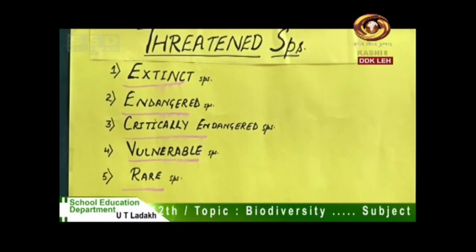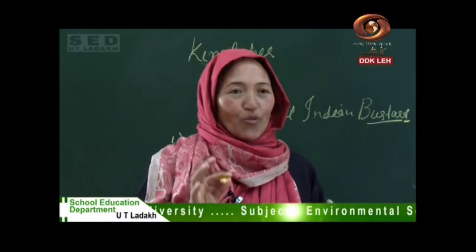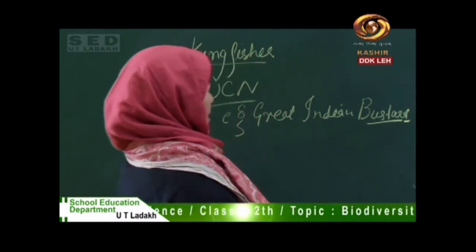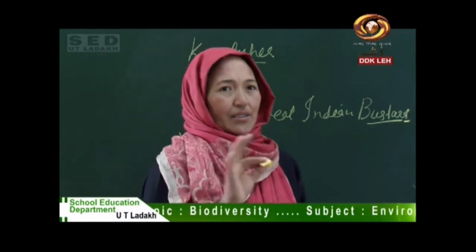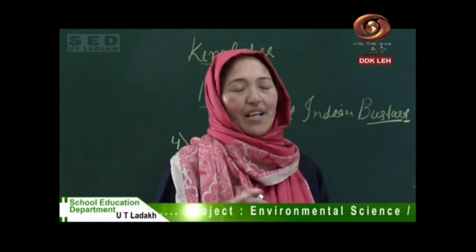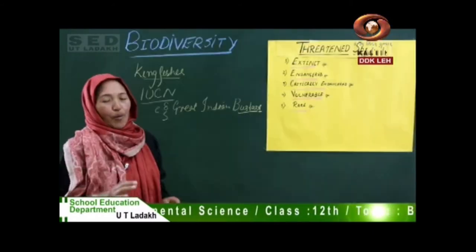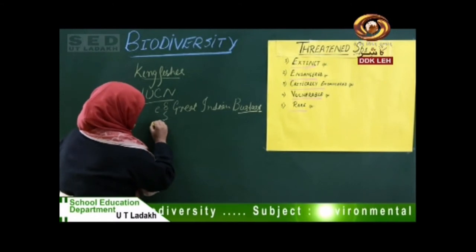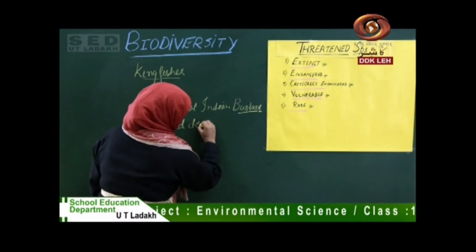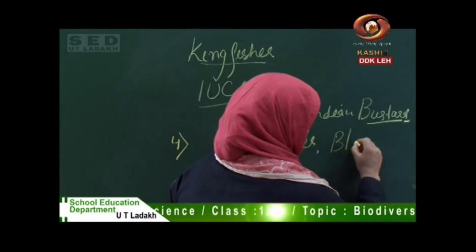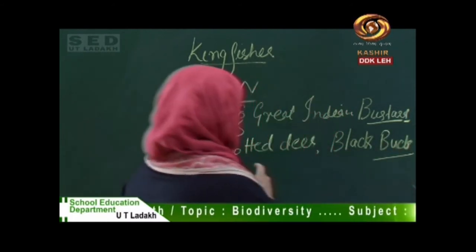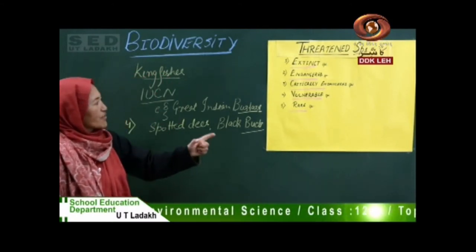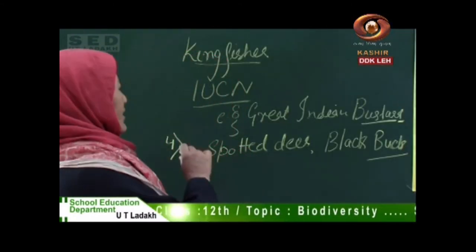Fourth is vulnerable species — those species whose population is declining because of over-exploitation of their habitat. Vulnerable species may face extinction or move to the endangered category if not conserved now. They are still abundant but if not conserved will become endangered. Examples of vulnerable species are the spotted deer and the black buck. Spotted deer is found in many national parks of India, and the black buck is found in Rajasthan. Their population is decreasing but not at an alarming rate, so they fall under the vulnerable category.